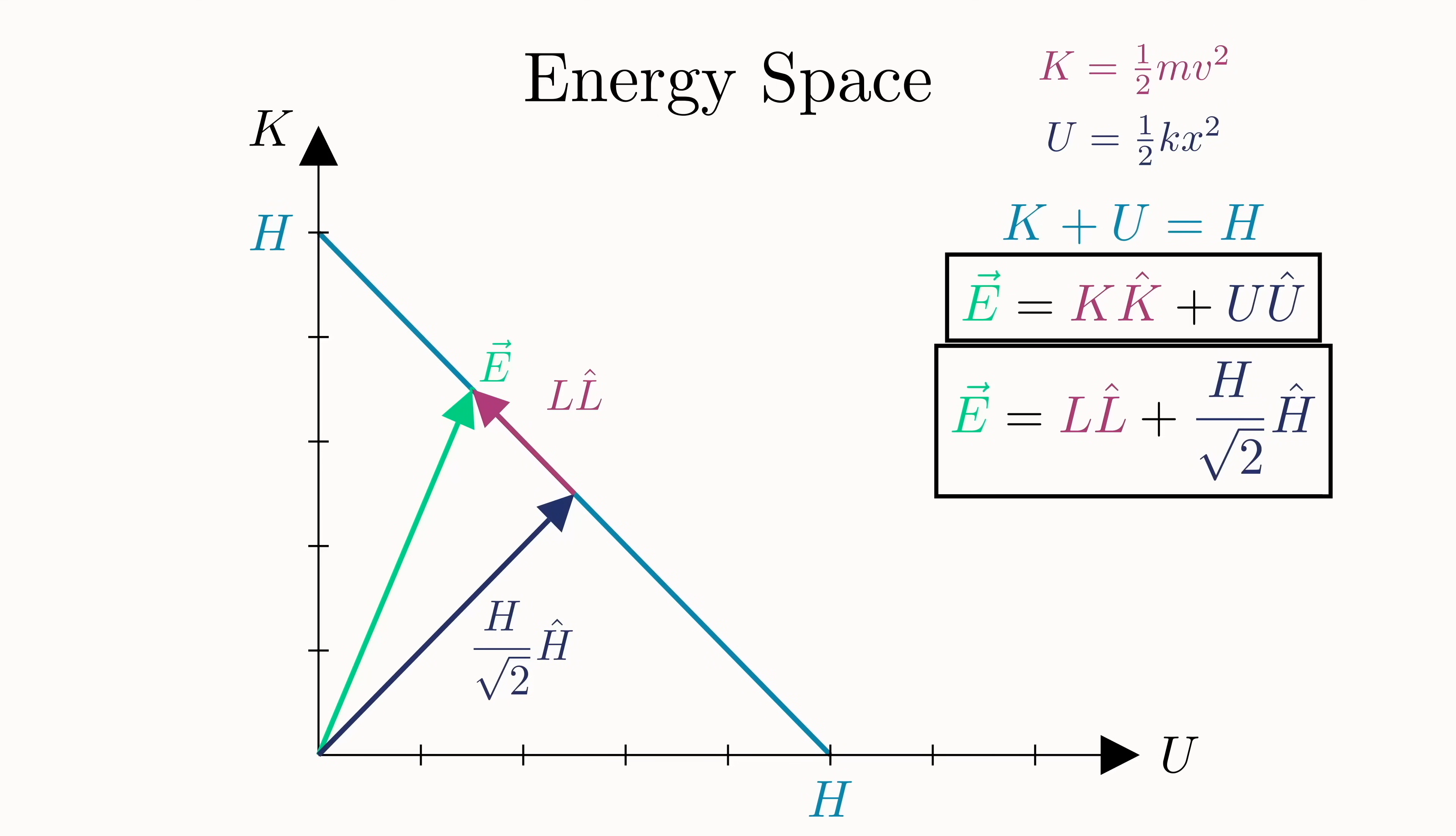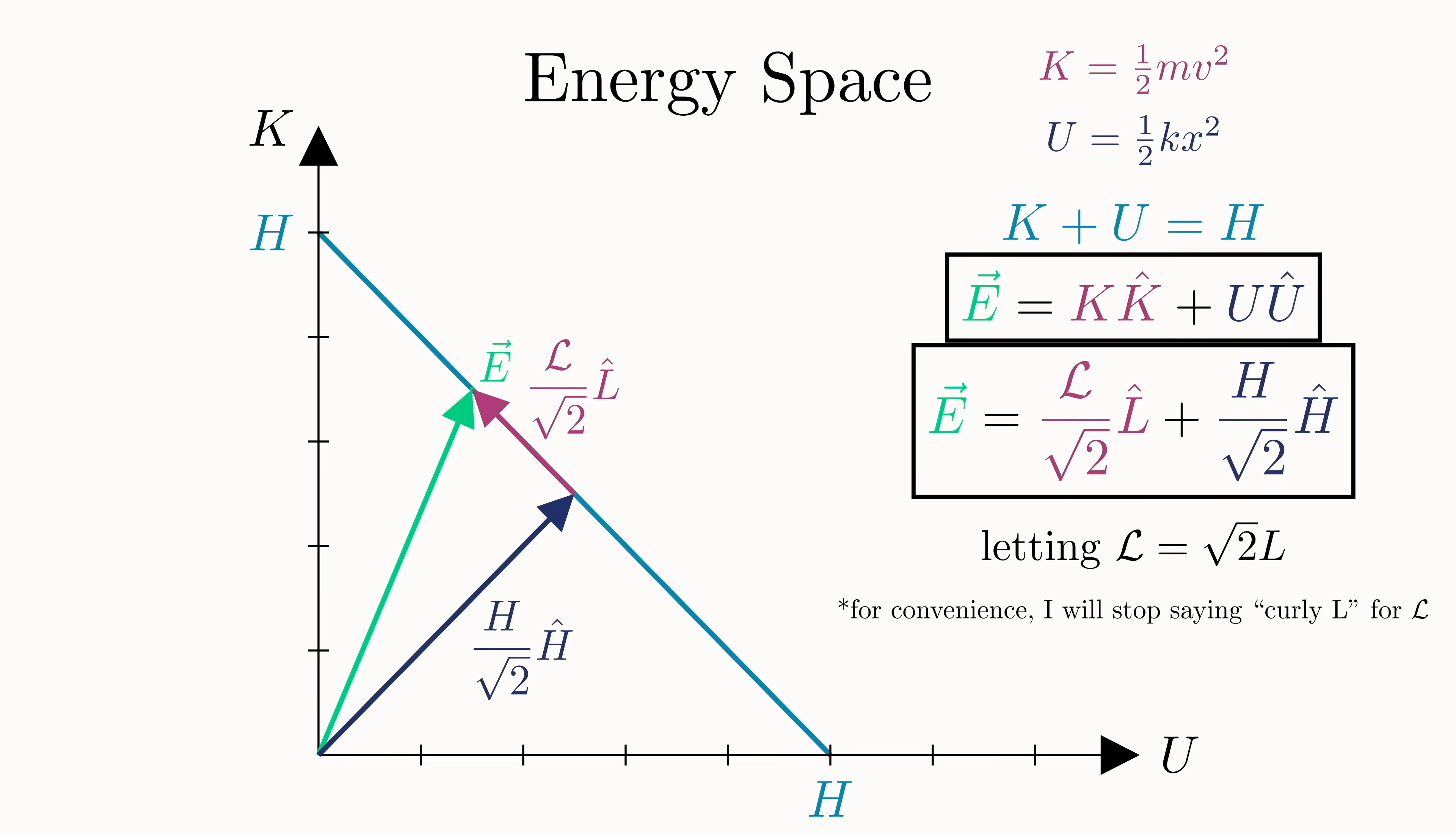To make things look a bit cleaner, we'll now define curly l to be l times the square root of 2. This doesn't change anything other than allowing us to now write e nicely as h over square root of 2 units in the h-hat direction plus curly l over square root of 2 units in the l-hat direction. Now while the bisecting vector is constant, this quantity l is important because it is a function of u and k. And it essentially can be just a single equation we use to determine the state of the system at any given moment.